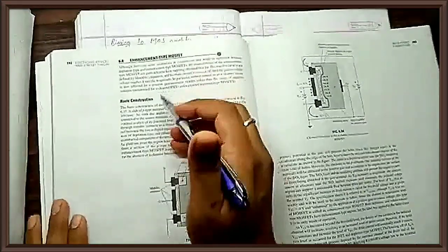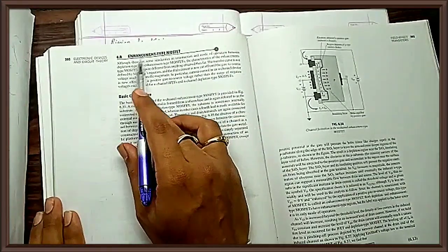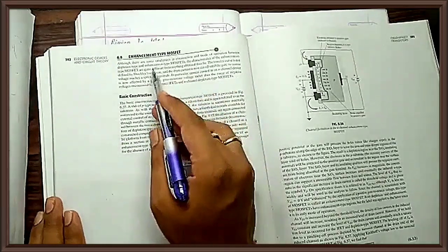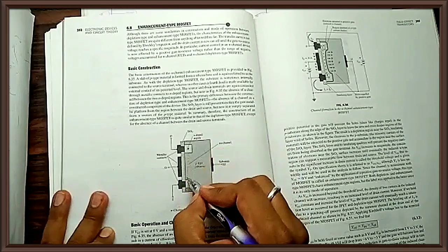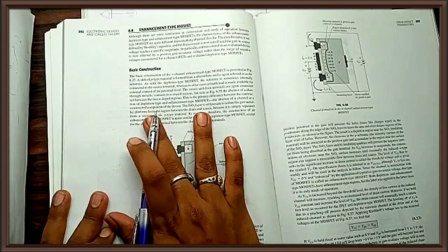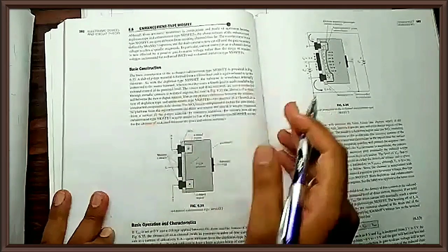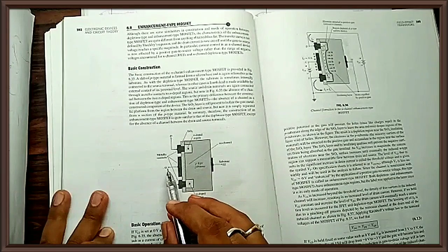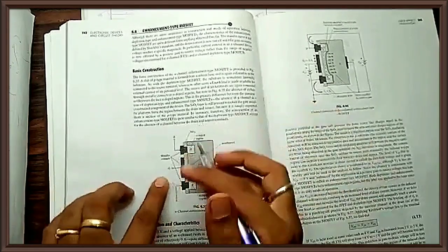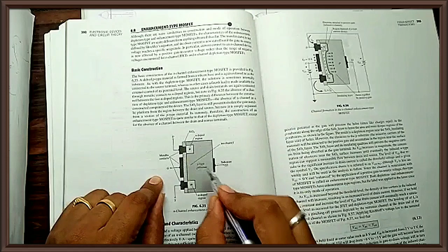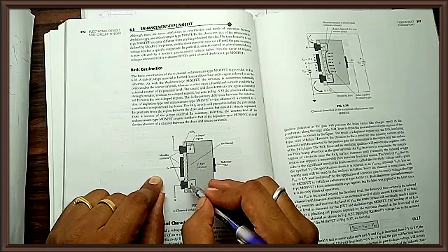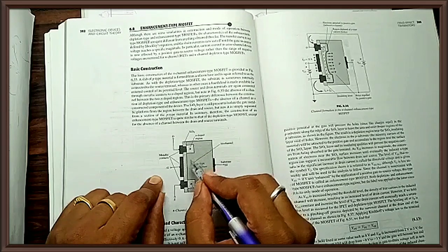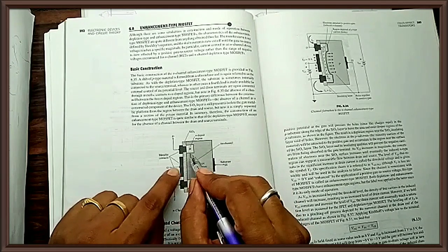I will be concentrating on enhancement type MOSFET. I will start with the construction — in this MOSFET there will not be any channel. Since the channel is absent, I call this to be an enhancement type MOSFET. We will see later why it is called enhancement type.